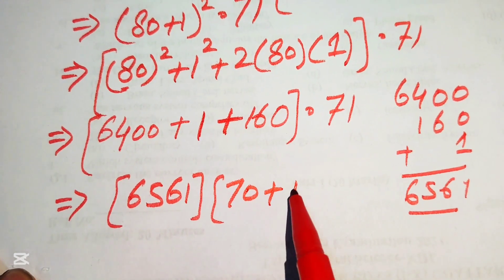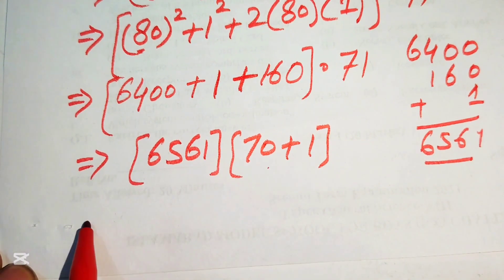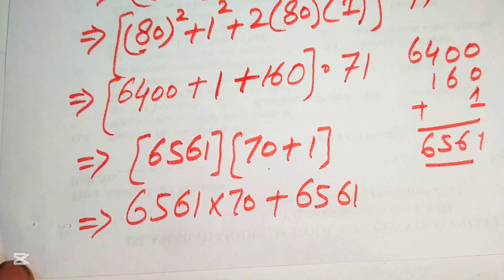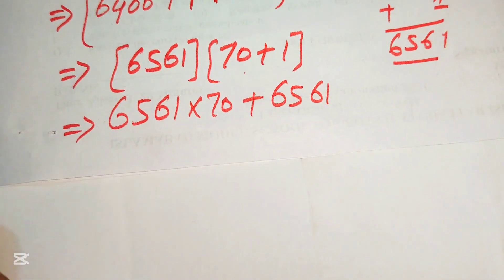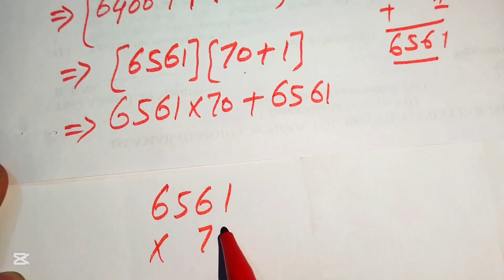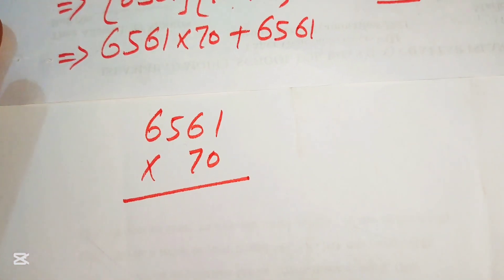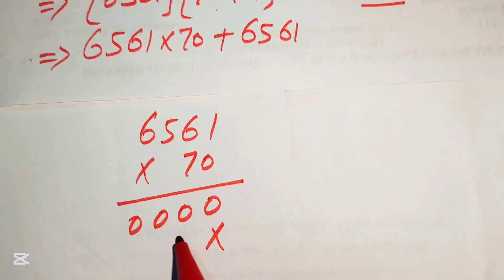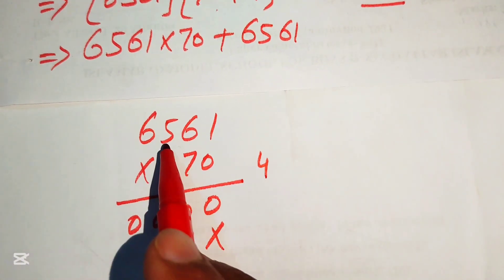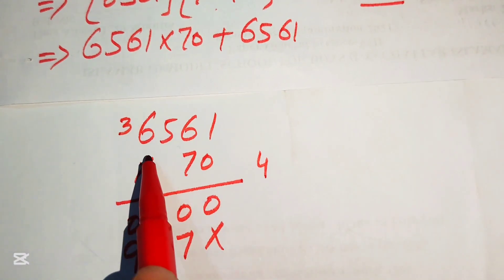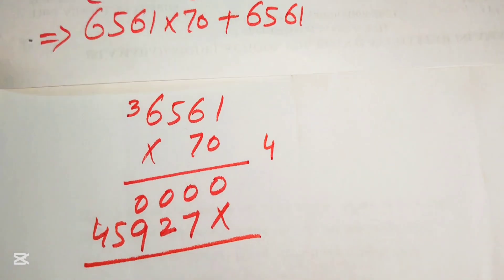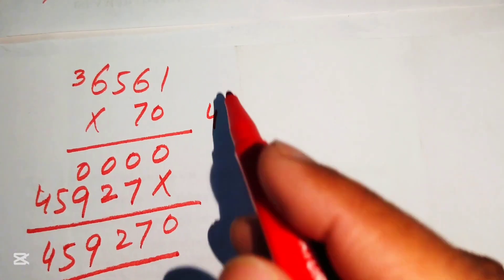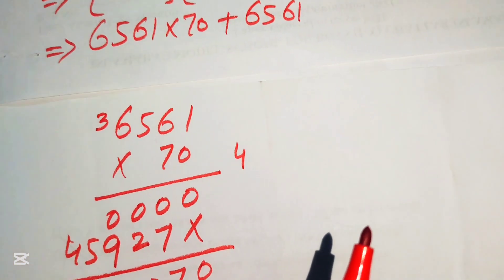We rewrite 71 as 70 plus 1. Multiplying: 6561 times 70 plus 6561 times 1. Using the traditional multiplication method for 6561 times 70: 0 times all digits gives 0; then 7 times 1 is 7, 7 times 6 is 42 — write 2 carry 4; 7 times 5 is 35 plus 4 is 39 — write 9 carry 3; 7 times 6 is 42 plus 3 is 45. So 6561 times 70 equals 459270.